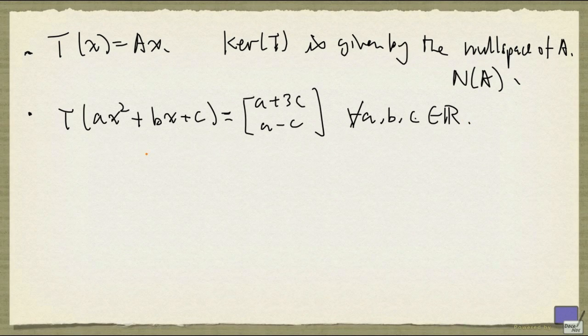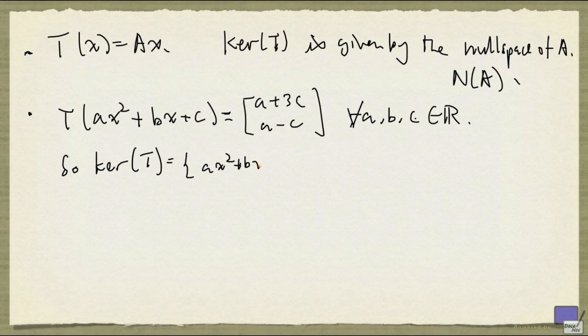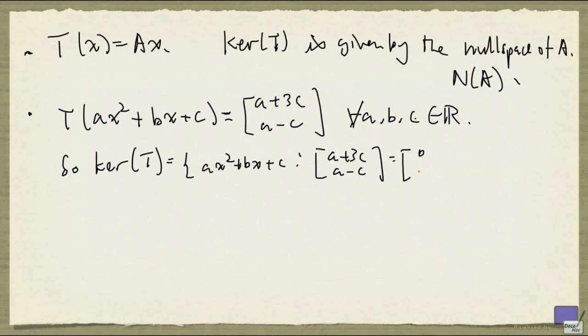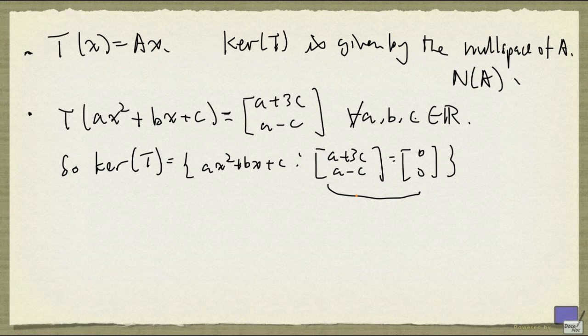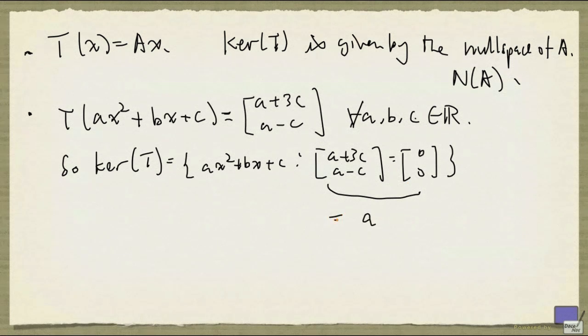So how do we find the kernel of T? Notice that the kernel will consist of quadratic polynomials. And so, the kernel of T will consist of polynomials such that a plus 3c, a minus c is the zero vector in R². And now, if we look at this system, the only way that this can be satisfied is when both a and c are zero.